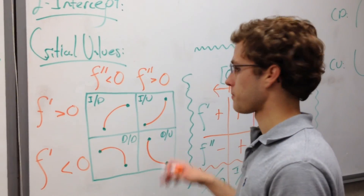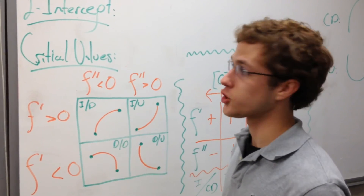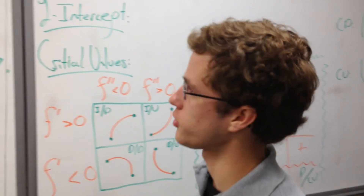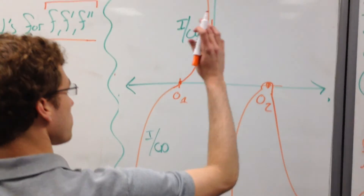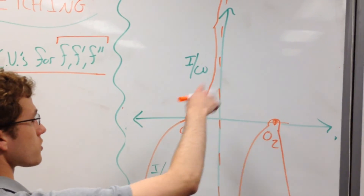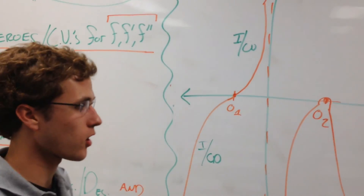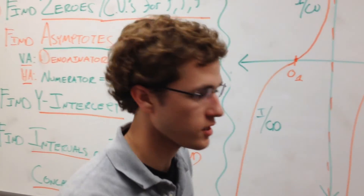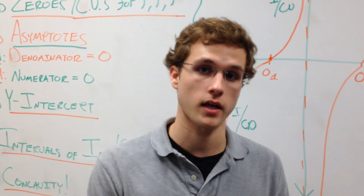Make your chart, write everything down, use the sign chart, and then plug your values onto your graph. Graph your curve depending on whether it's increasing or decreasing, and concave up or concave down, and you're done.